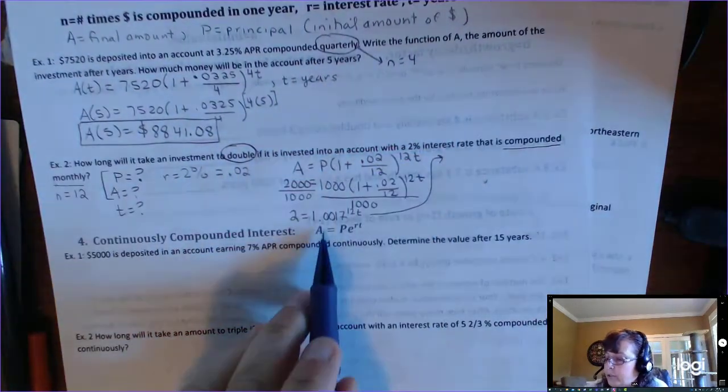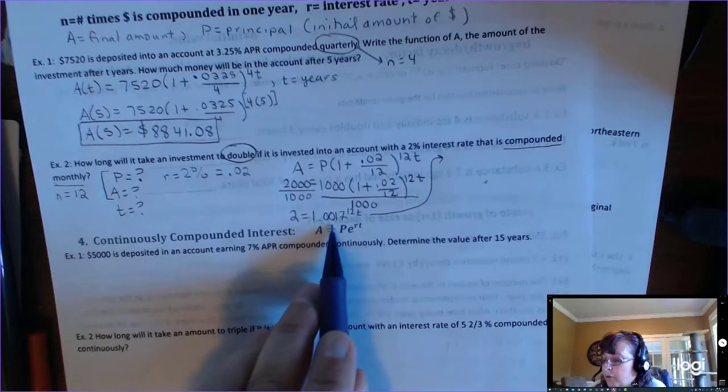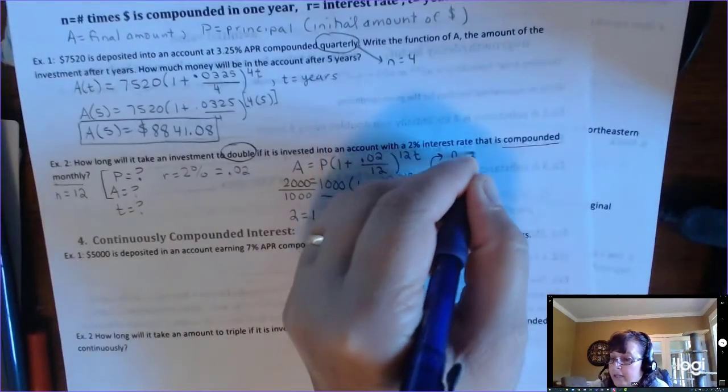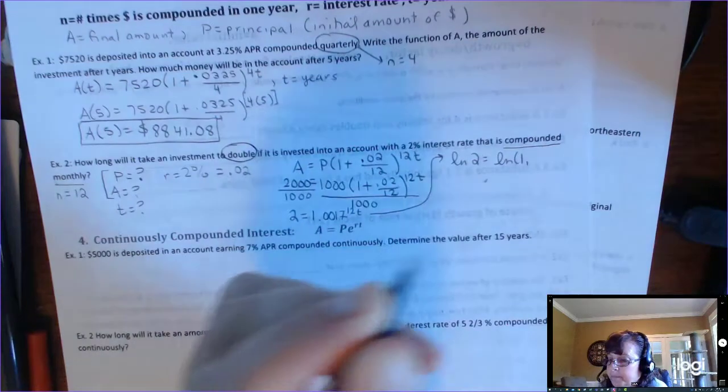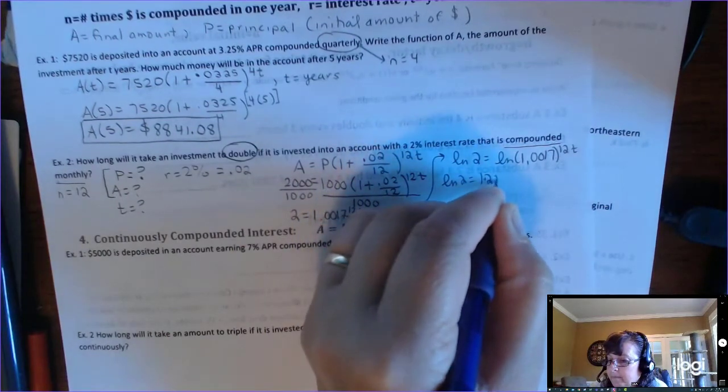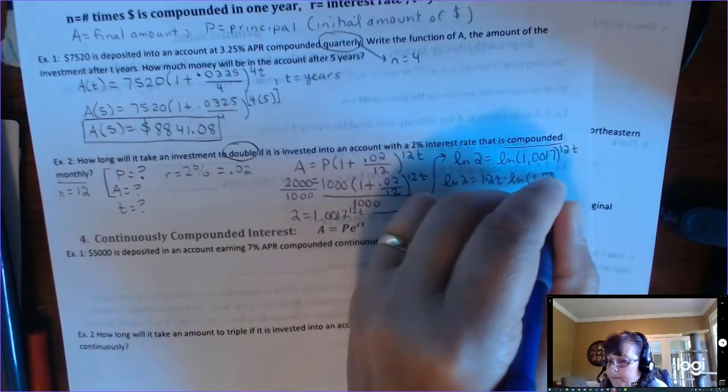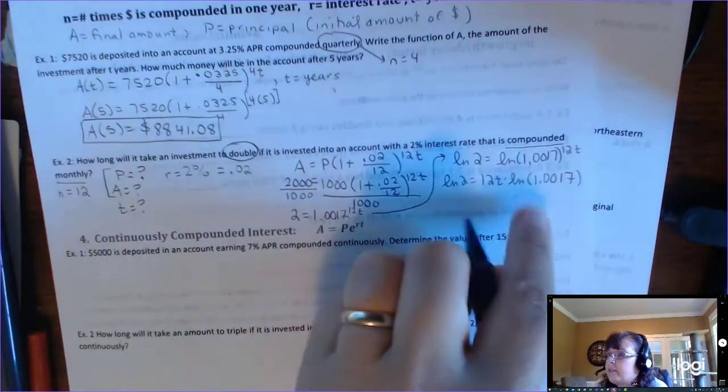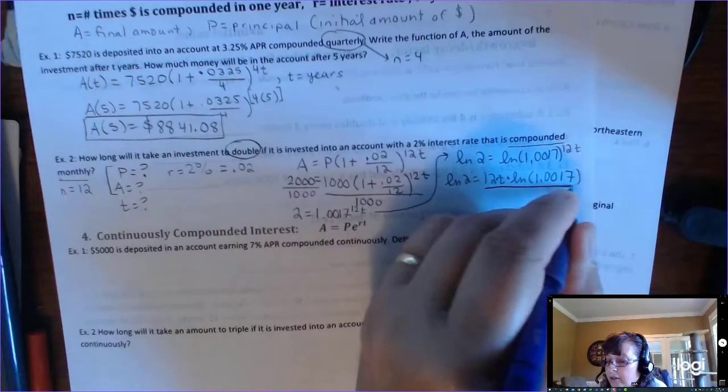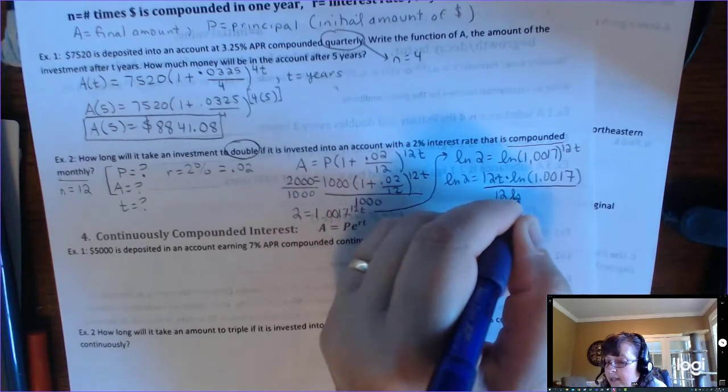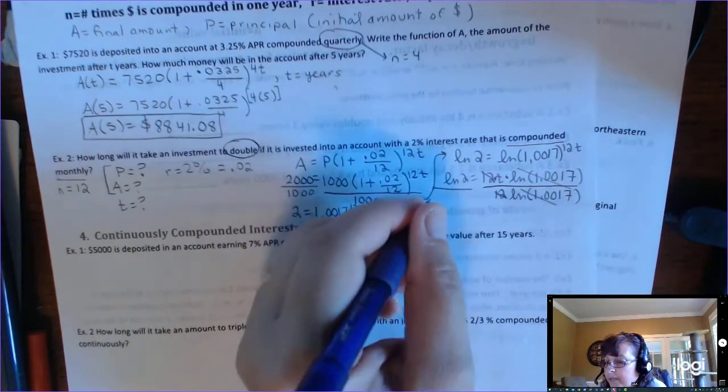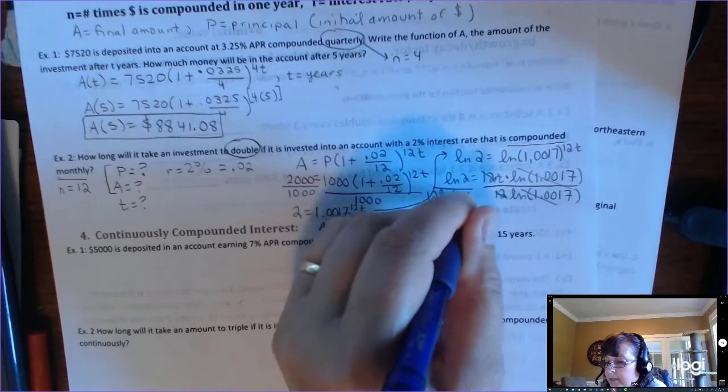All right, now how would you solve this? Well, you can't divide out the 1.0017. Remember, you're solving for T. It's an exponential equation. So you have to take the natural log of both sides and then use the power rule. And then to solve for T, now you've got multiplication. You've got 12 times T times natural log of 1.0017. So we can undo that by dividing by 12 times natural log of 1.0017. That's going to cancel all of that and leave you with T. Whatever you do on one side, you have to do on the other.